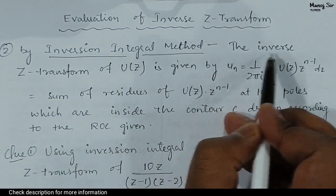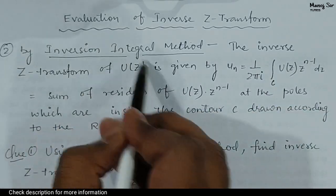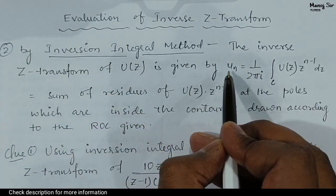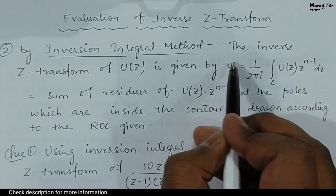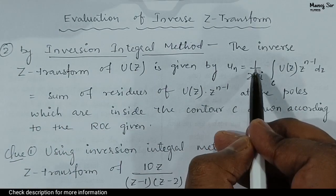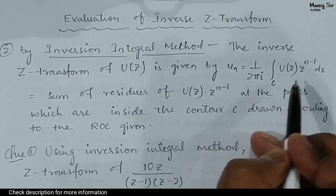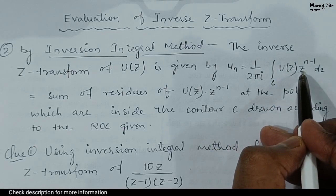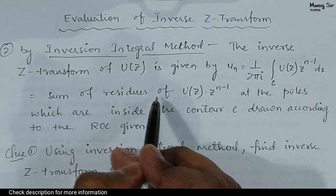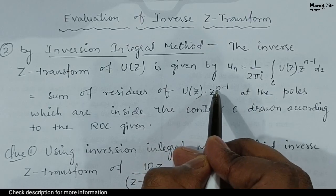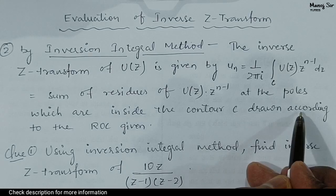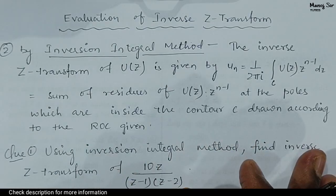Evaluation of inverse Z transform by inversion integral method or residue method. The inverse Z transform of U(z) is given by u(n), which equals 1 upon 2πi times the integral under the curve C of U(z) into z power n minus 1 dz. This is again equal to the sum of residues of U(z) into z power n minus 1 at the poles which are inside the contour C, drawn according to the region of convergence given in the problem.